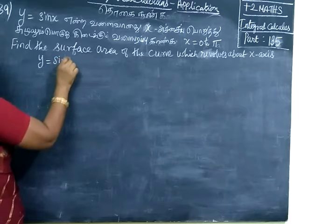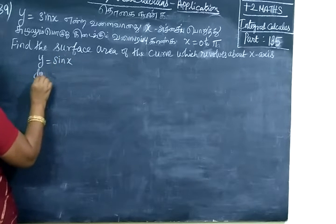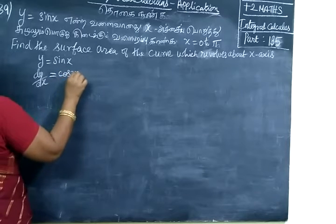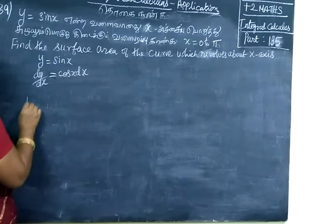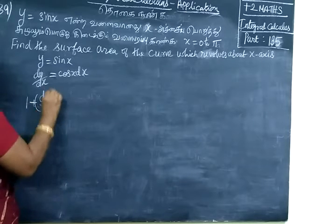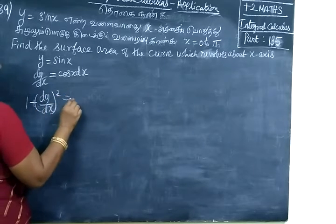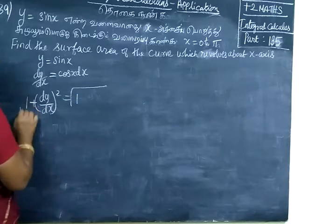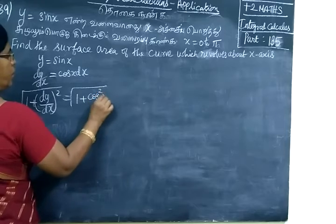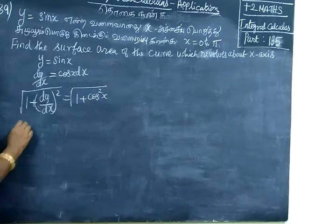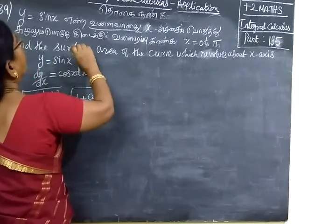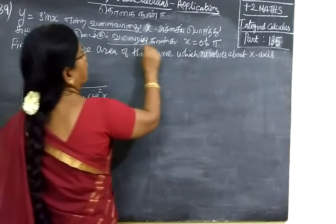y is equal to sin(x). Find dy/dx. The derivative of sin(x) is cos(x) dx. Now find 1 plus (dy/dx) squared, which gives root of 1 plus cos²(x).